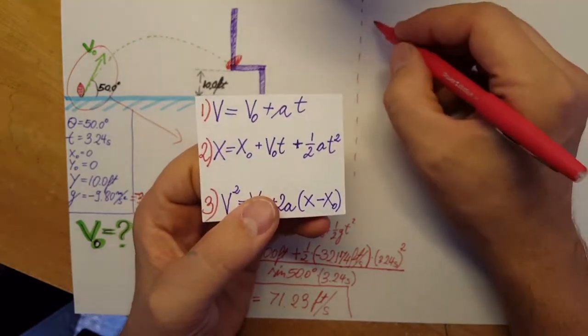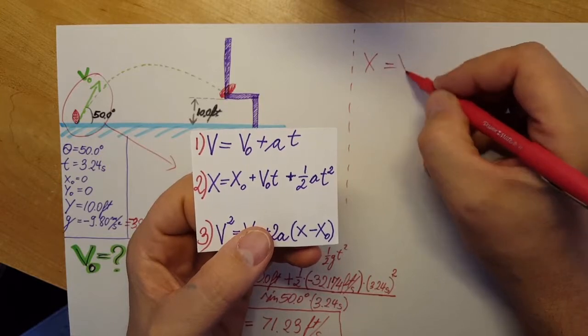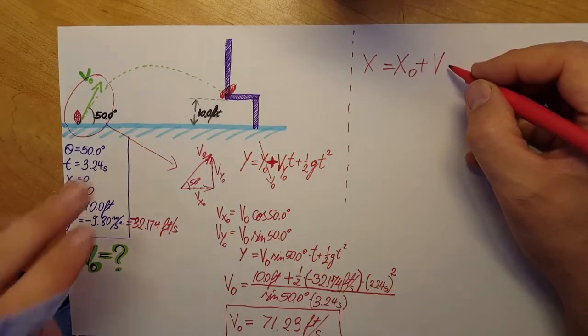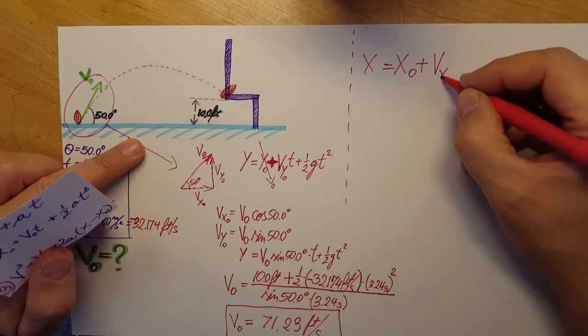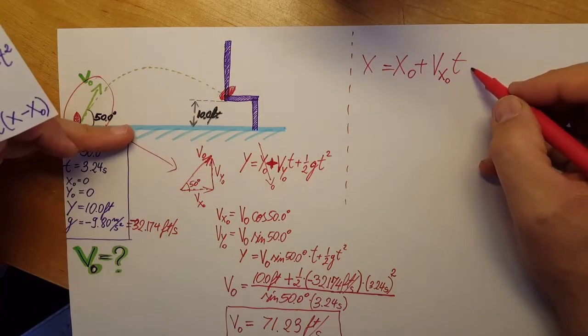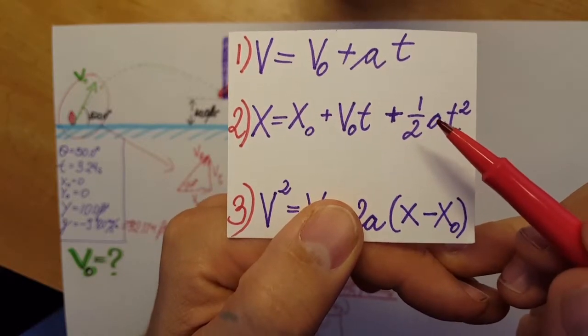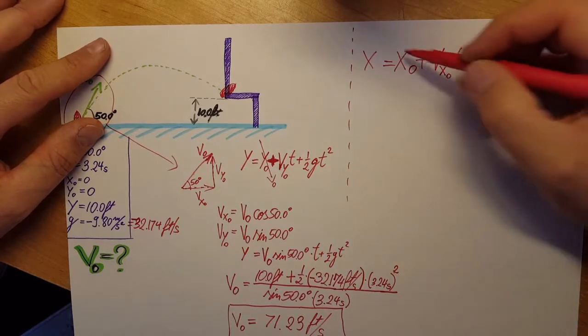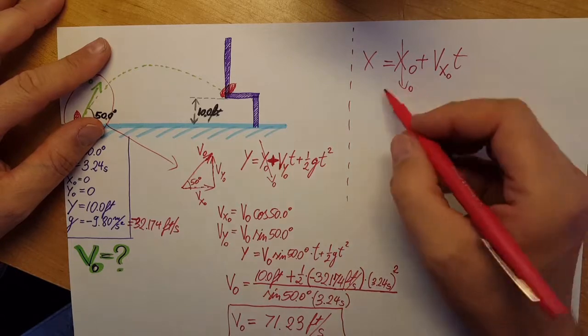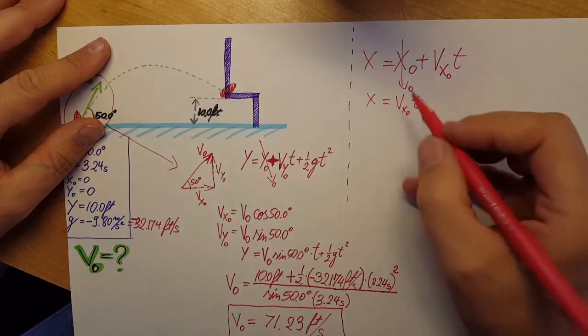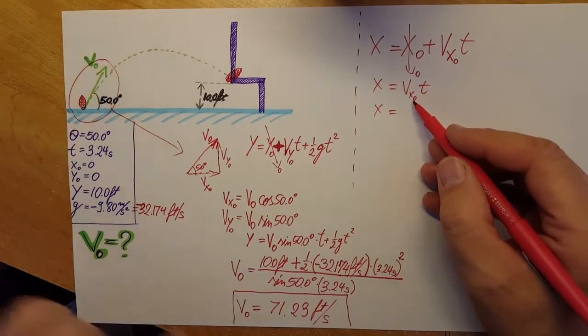So x equals x naught plus v and this will be we're gonna use it in the x dimension so it's gonna be v x naught t and in the x direction we do not have an acceleration so right here our acceleration is 0 therefore this term is gone. So all we have left is this. We can also notice that this term goes to 0 and x equals v x naught t. That's all we have left.